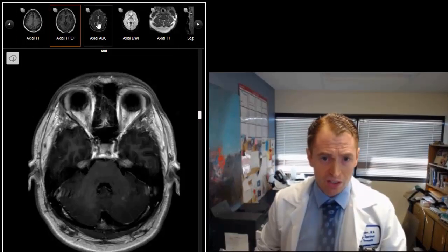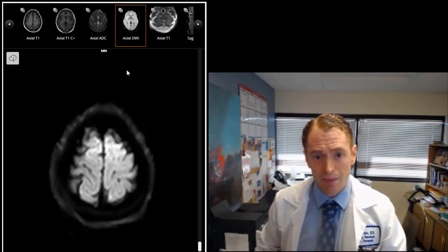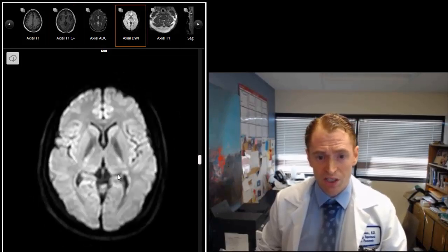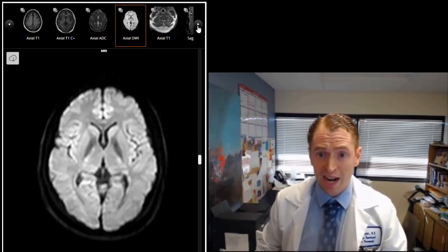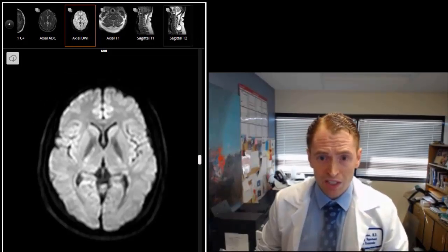Now I won't talk too much about these other sequences, but ADC and DWI are used mostly for diagnosing acute stroke. But a lot of MS lesions can be a little bit diffusion restricting if they're active. But now we'll move on to the spine.